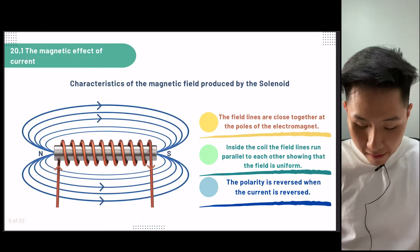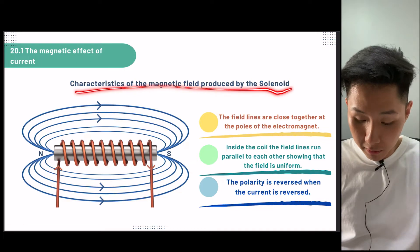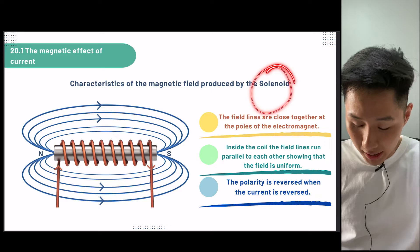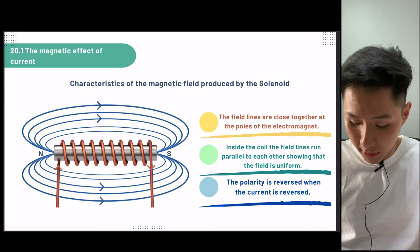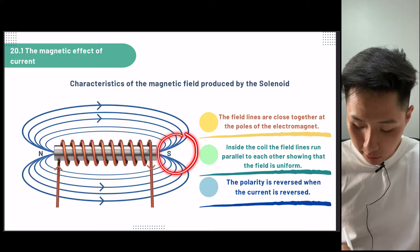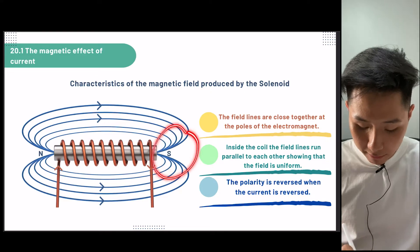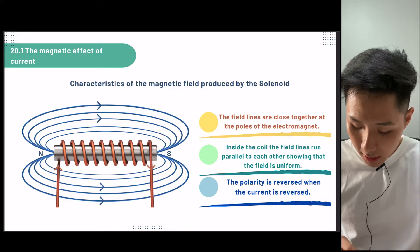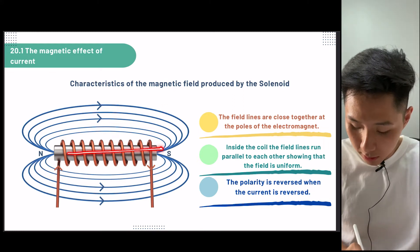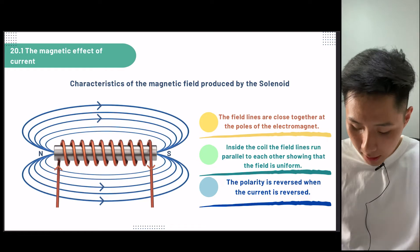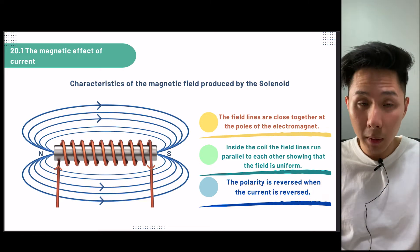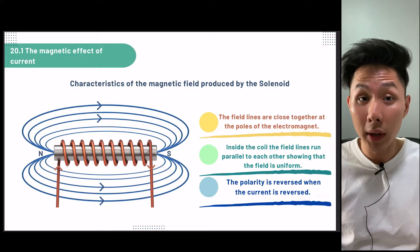Here are some characteristics of the magnetic field produced by a solenoid — which is also a magnetic field produced by electricity. The field lines that are closer together are at the poles of the electromagnet, where they have the strongest magnetic field. Inside a coil, the lines run parallel to each other to show that the field is uniform. And the polarity, meaning the north and south pole, will be reversed when the direction of current flow is reversed.